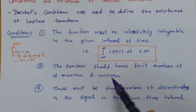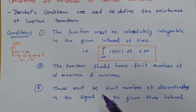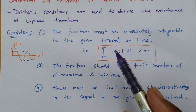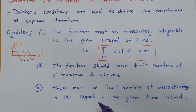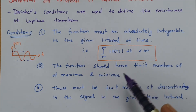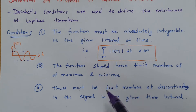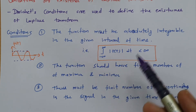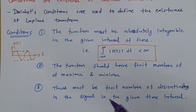These three basic conditions define whether the Laplace transform exists or not. First, the signal must be absolutely integrable. Second, the signal should have a finite number of maxima and minima. Third, the signal must have a finite number of discontinuities. Only then can one say that the Laplace transform of a given signal is possible; otherwise, the Laplace transform cannot be determined.